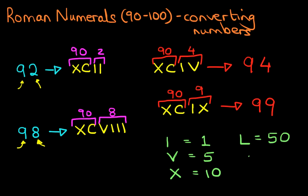And lastly, we've also now come across C, which is 100. So just by using these five letters, I, V, X, L, and C, we can write all the numbers up to 100 in Roman numerals.